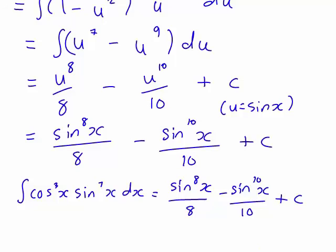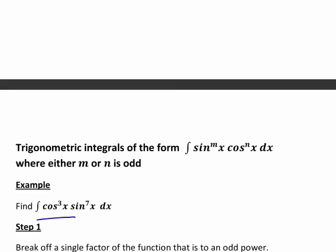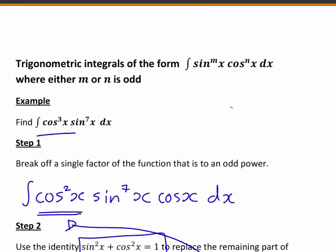So in summary, this was a case where at least one of the powers of sine or cosine was odd. In this case, in actual fact, they both were. So it was easiest to choose to work with the lower power, which was our cos to the power of 3x. We broke off a factor of that, cos x.